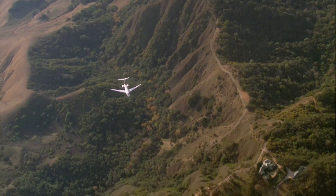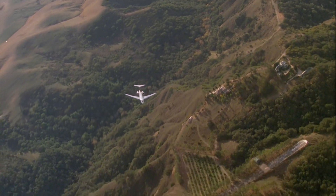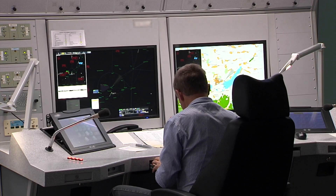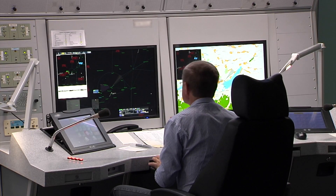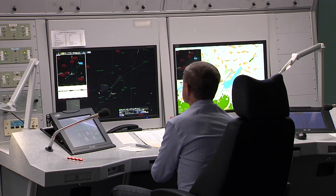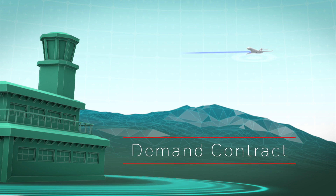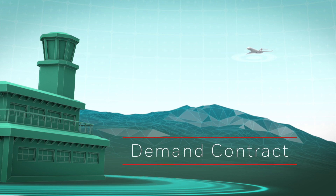Another type of contract that can be established is a demand contract. A demand contract is a one-time contract set up by the ground station requesting certain information from the aircraft. It can be thought of as the ground station pinging the aircraft for data. Most demand contracts are satisfied immediately and will not be shown in the ADS review pages.